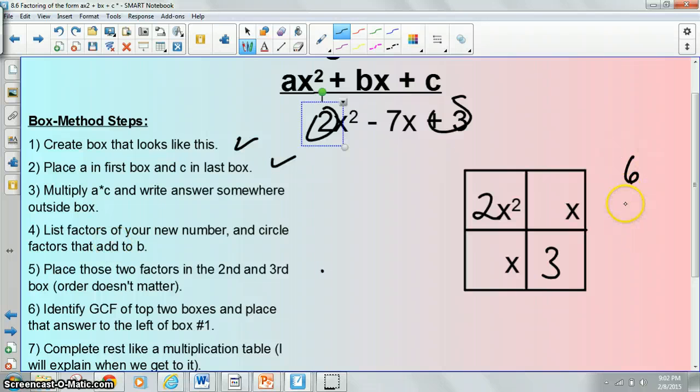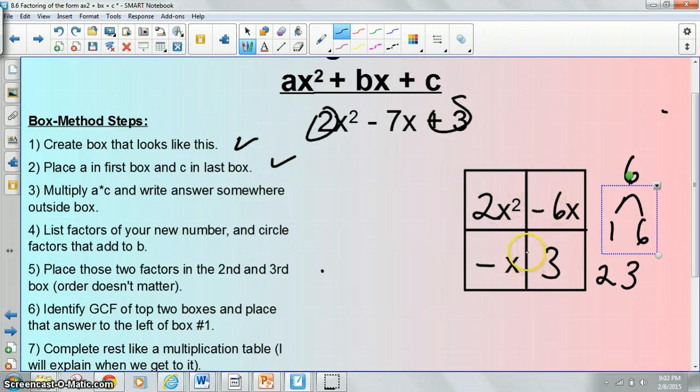Then, list the factors of that new number. Factors of 6 are 1 and 6 and 2 and 3. Circle the factors that add to B. B is our middle term. So, could 1 and 6 ever get us to negative 7? And could 2 and 3 ever get us to negative 7? If 1 and 6 were both negative, that would be negative 7. And so negative 1 and negative 6 are going to be our answers. You're going to write those in these boxes.